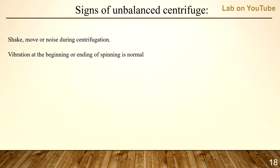Vibration at the beginning or end of spinning is normal. It occurs as the rotor passes through a so-called critical speed range where small vibrations are temporarily amplified. It won't affect separation because the centrifugal force is still high enough to stabilize them. However, a well-balanced centrifuge will minimize vibration.